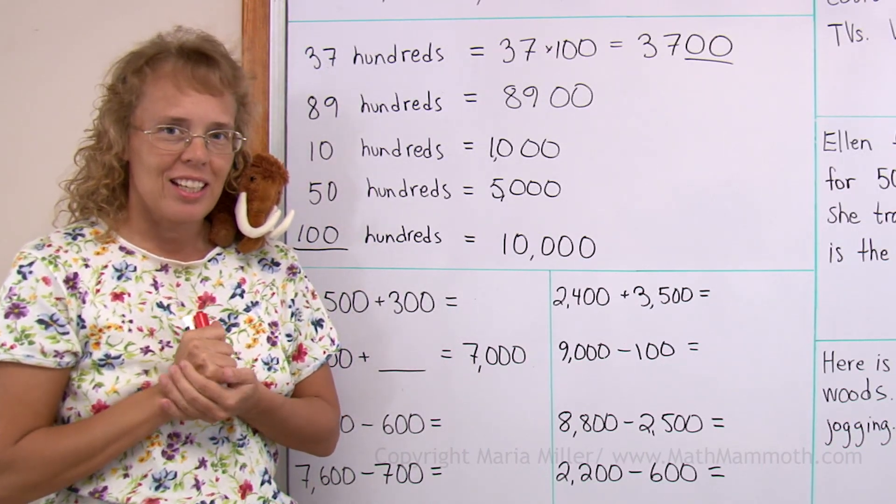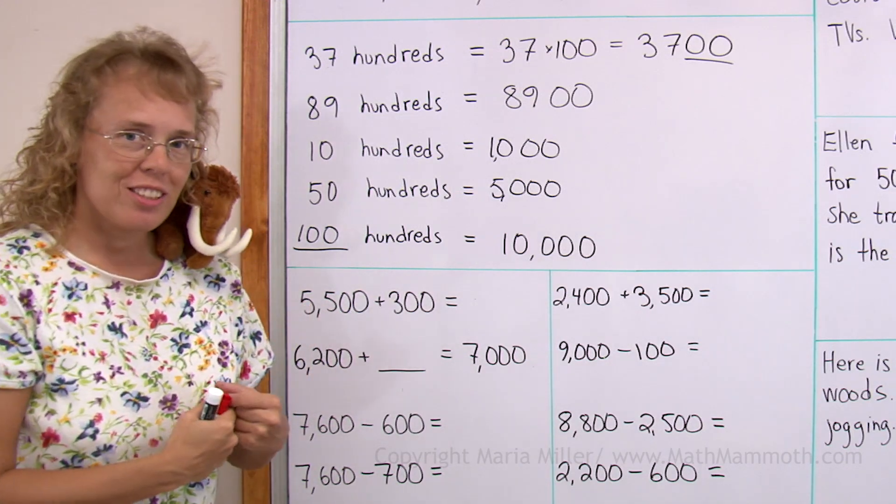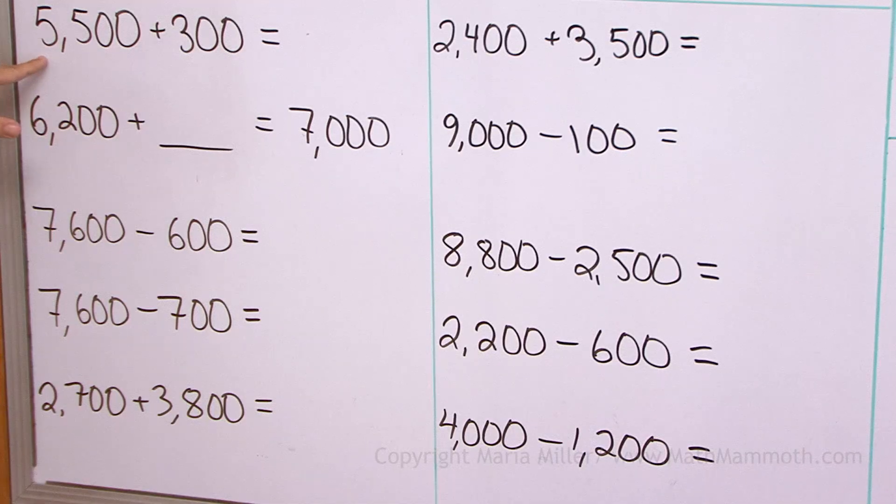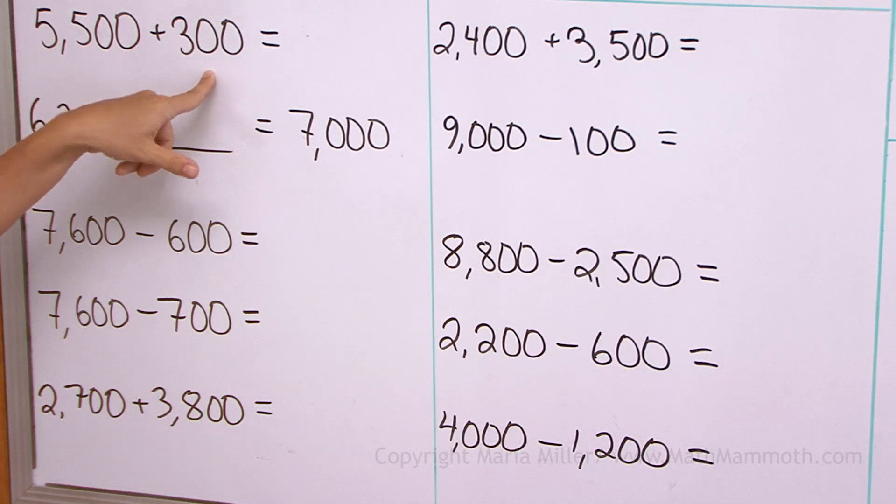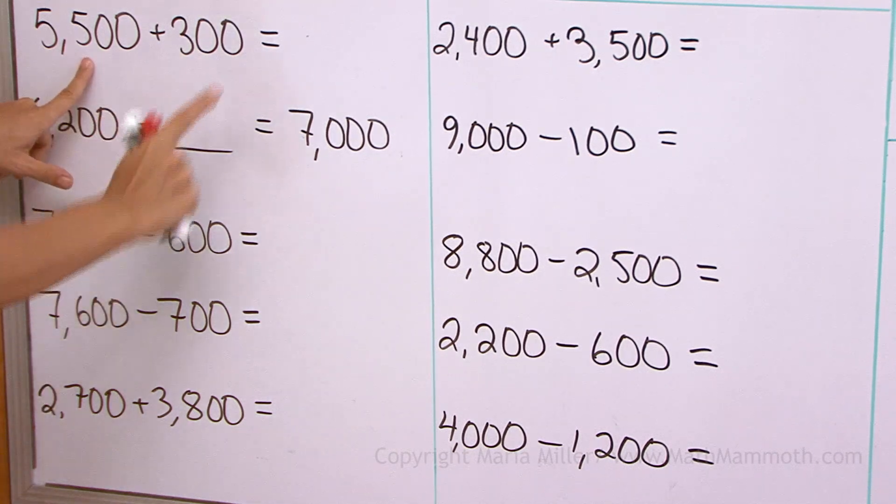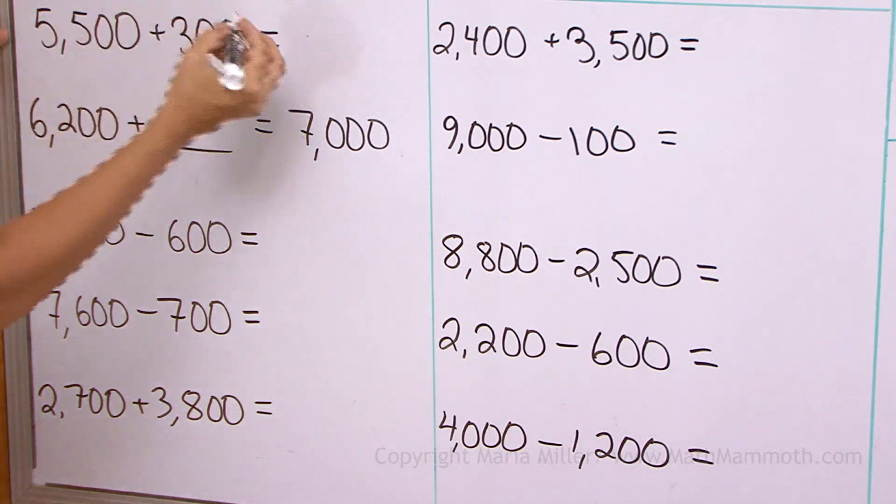Now we are going to use this idea when we are going to add and subtract mentally with whole hundreds. For example, this one here, 5500 plus 300. Well, you can see it is easy. You add 500 and 300. You get 800, right? So we have 5800.